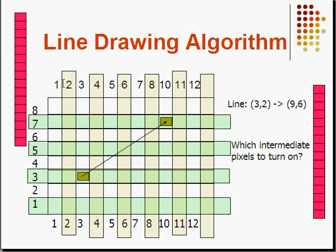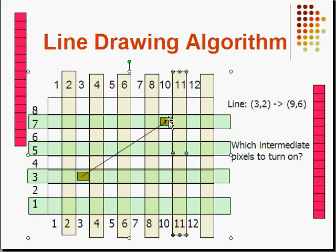Here you can see the pixels addressed 1, 2, 3 along the x and y axis. We have a target line starting from (3,3) to (10,7). Each of these rectangles represents pixels on the screen. We can draw the line only by illuminating the required pixels, so we have to decide which pixel to illuminate to get the line displayed.